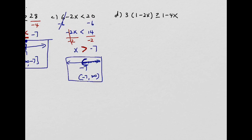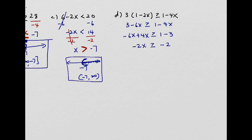For part d: 3 times (1 minus 2x) is greater than or equal to 1 minus 4x. Open the parentheses by distributing, same as equations. Then collect terms with the variable together: negative 6x moves to the other side as positive 4x, and positive 3 moves as negative 3, giving negative 2x is greater than or equal to negative 2. Divide by negative 2 and flip the inequality sign — x is less than or equal to positive 1.